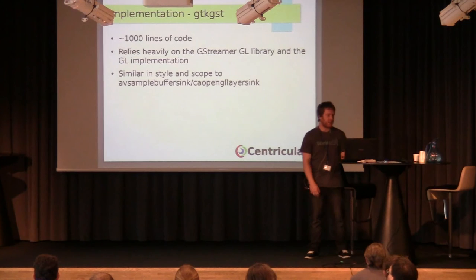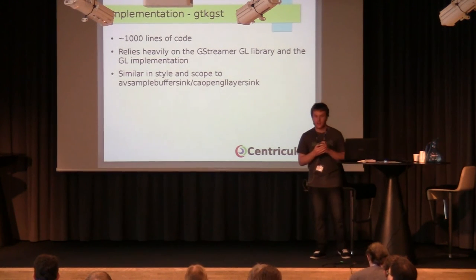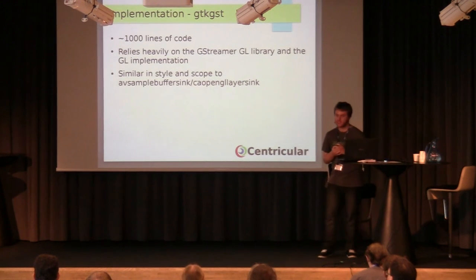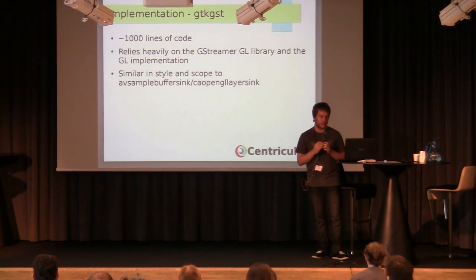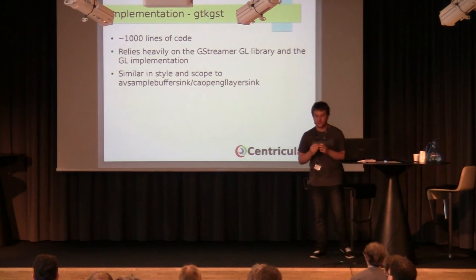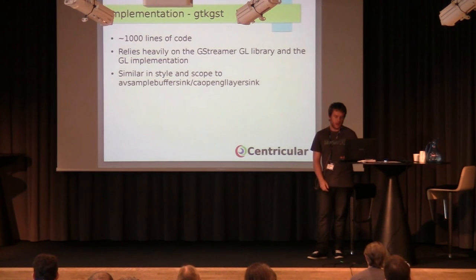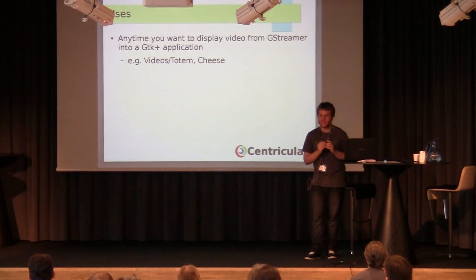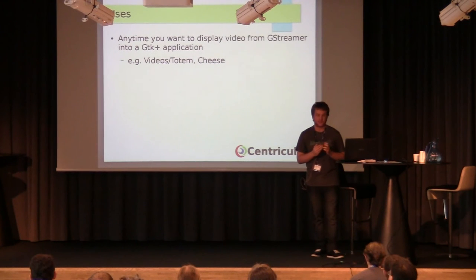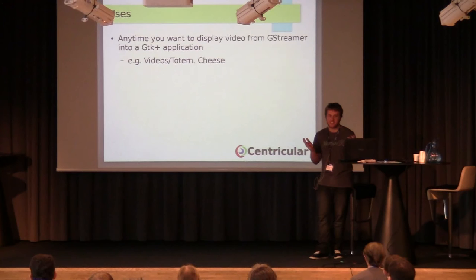The implementation — how it works — is roughly a thousand lines of code, very small. It relies heavily on the GStreamer OpenGL library. There are other similar sinks: AVSampleBufferSync, which is an OSX-provided implementation; CA OpenGL layer, another OSX implementation; and a new Qt QML one for QML applications. Use it wherever you want to display video, in applications like Totem, or Cheese — basically wherever Clutter is generally used now.